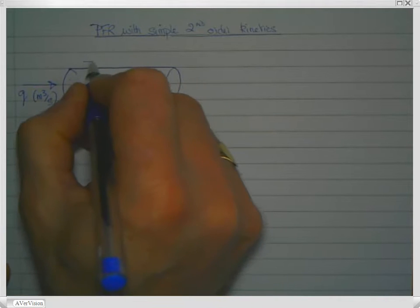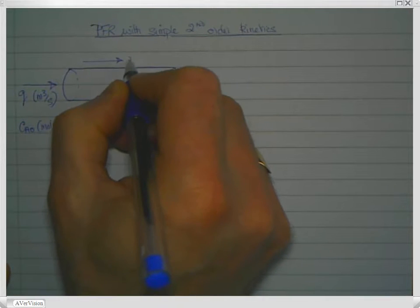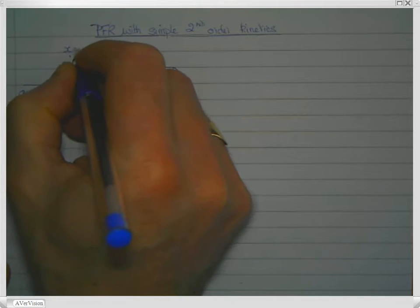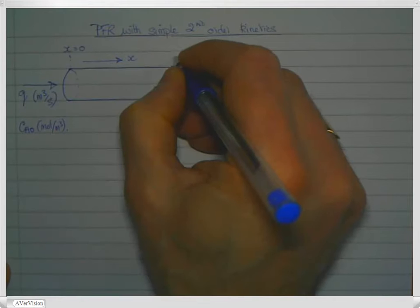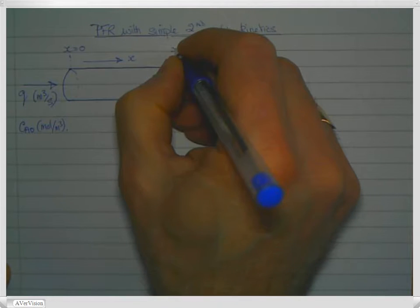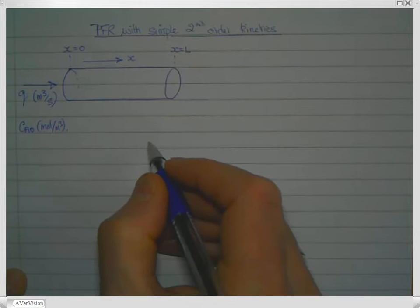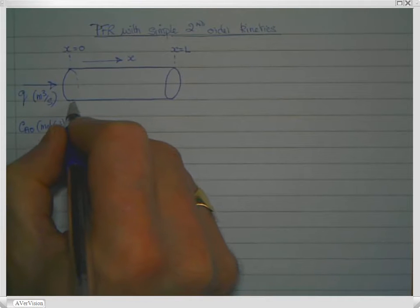Now we're going to travel along the reactor, along distance x. At the inlet we're going to define x equals 0, and at the outlet we're going to say that x equals L, which is our desired design length.